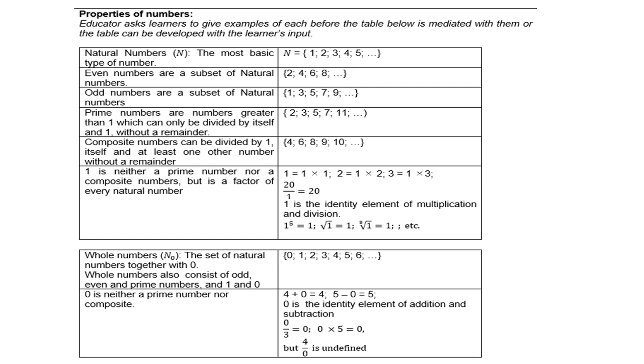Zero is neither a prime number nor composite. For instance, 4 plus 0 is 4, 5 minus 0 is 5. So zero is the identity element of addition and subtraction. Zero divided by 3 is 0, zero times 5 is 0, but 4 divided by 0 is undefined.